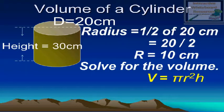Solve for the volume using the formula. Volume of a cylinder is pi r squared times height.